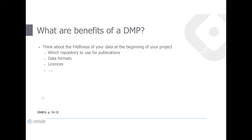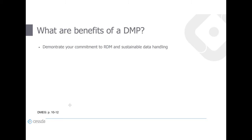In terms of the FAIR principles, you can use the DMP as a guideline throughout the project — thinking from the beginning about which repositories you'd like to use, reaching out to them in advance, and considering different data formats for publication. Last but not least, DMPs demonstrate that you are committed to research data management and sustainable data handling, which becomes increasingly important and is valued by many funding organizations.